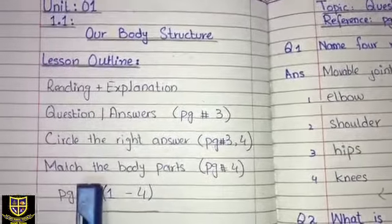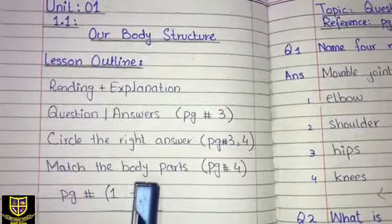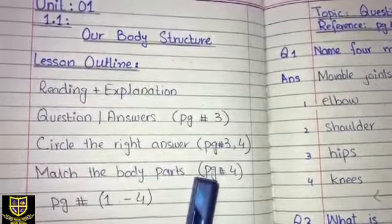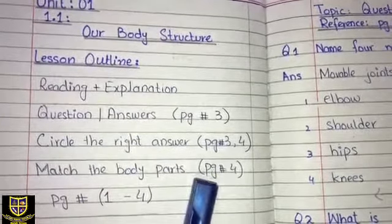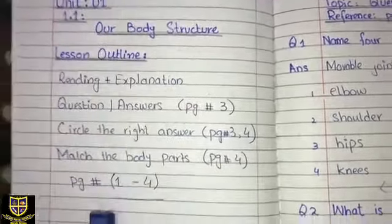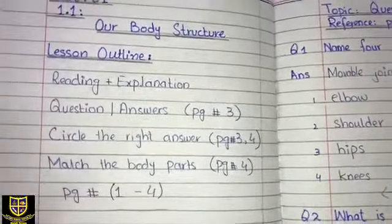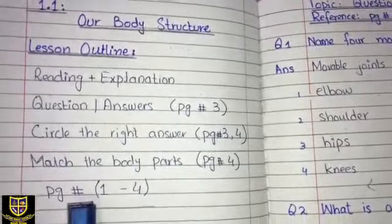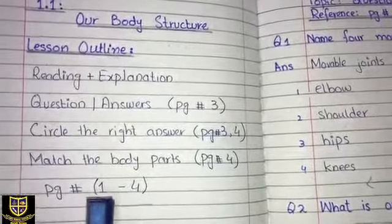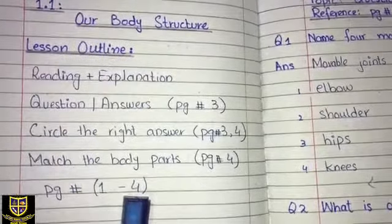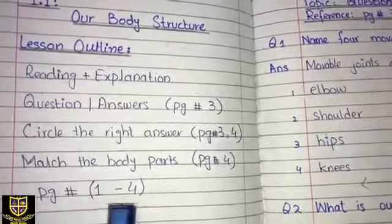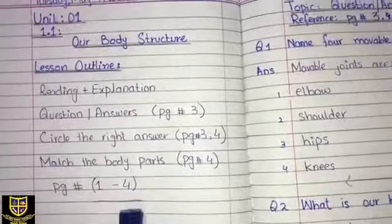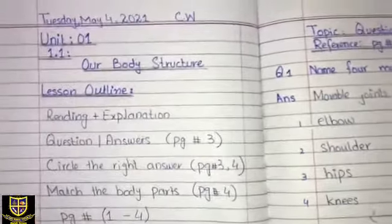Then you have match the body parts, which we have done in the book on page number 4 — that you will mention. The overall unit is covered on page number 1 to page number 4. So this is all you have. This is your lesson outline.